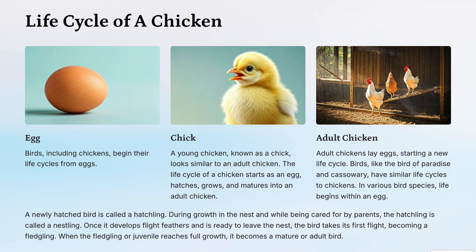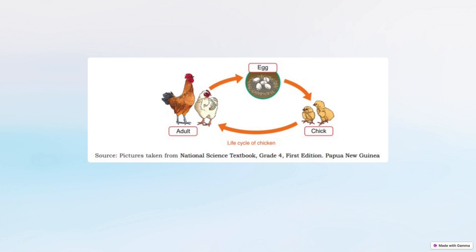Birds like the bird of paradise and cassowary have similar life cycles to chickens. In various bird species, life begins within an egg. A newly hatched bird is called a hatchling; while growing in the nest and being cared for by parents, it is called a nestling. Once it develops flight feathers and leaves the nest, it becomes a fledgling. When the fledgling reaches full growth, it becomes a mature adult bird. The illustration shows the cycle from egg, to chick, to adult chicken.